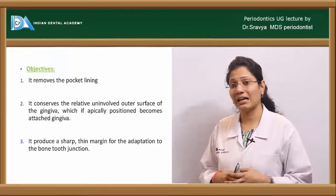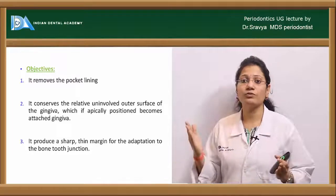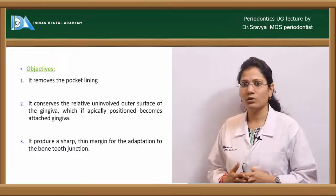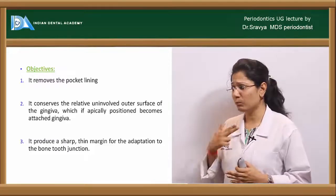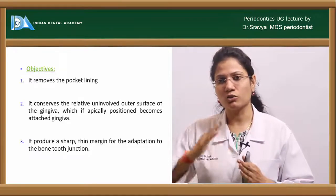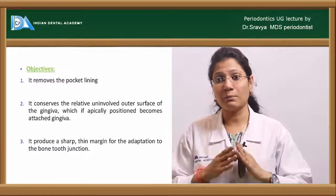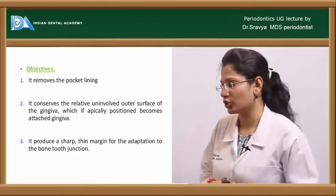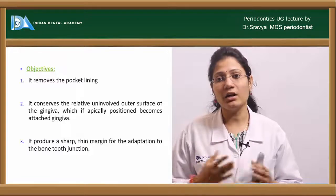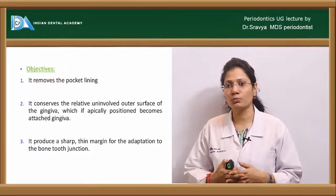The objectives of the internal bevel incision are: first, it removes the entire pocket lining. Second, it conserves the relatively uninvolved outer surface of the gingiva which, if apically positioned, will become your attached gingiva — the entire outer lining is preserved so when the flap is displaced apically, that pocket epithelium can become your attached gingiva. Third, you get sharp, fine, knife-edged margins at the end of surgery, allowing better adaptation to your tooth-bone junction.